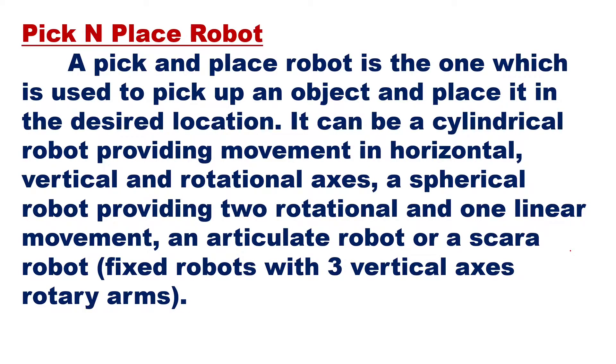Pick and place means picking an object from one location and placing it on another desired location. The definition of a pick and place robot is: a robot which is used to pick up an object and place it in the desired location. This is the basic meaning of the name itself.